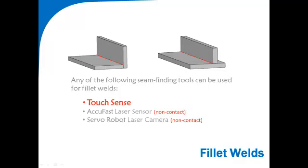We offer several tools for locating seams for fillet welds, including TouchSense, a low-cost seam finding tool that uses the welding wire as a probe to contact the work surface. AccuFast is a point laser that searches and detects the work surface when the laser reaches its programmed focal point. It's similar to TouchSensing, but is non-contact and significantly faster.